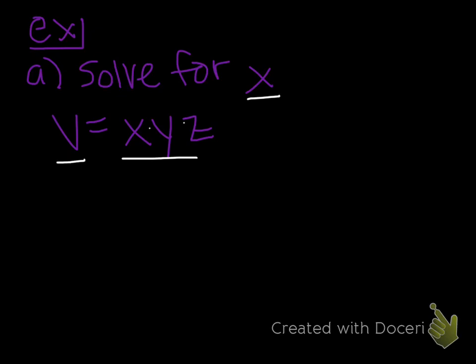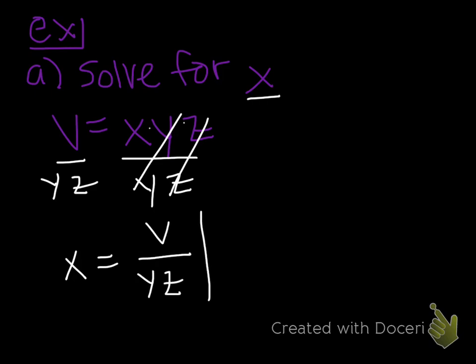If I want x to be by itself, that means everything next to it needs to go. So I'm going to divide both sides by yz. By doing that, the y's and the z's cancel, x is now by itself, and we would say x equals v over yz. And that is our answer.